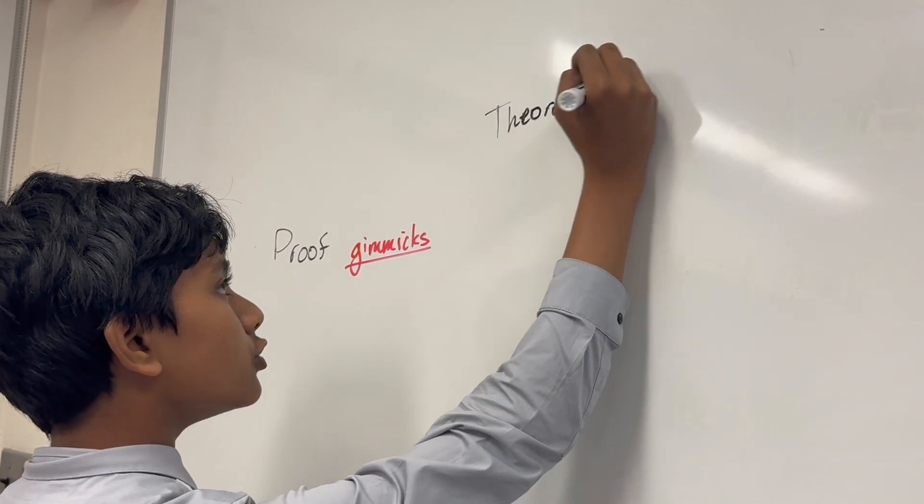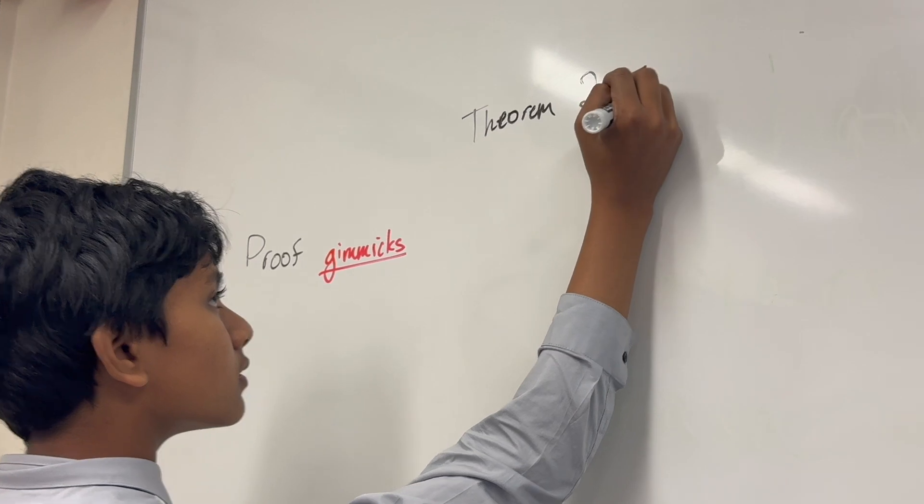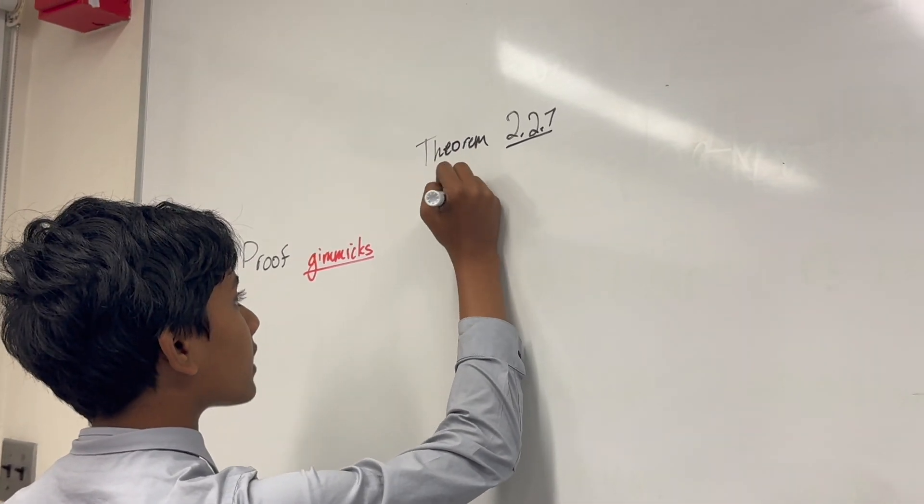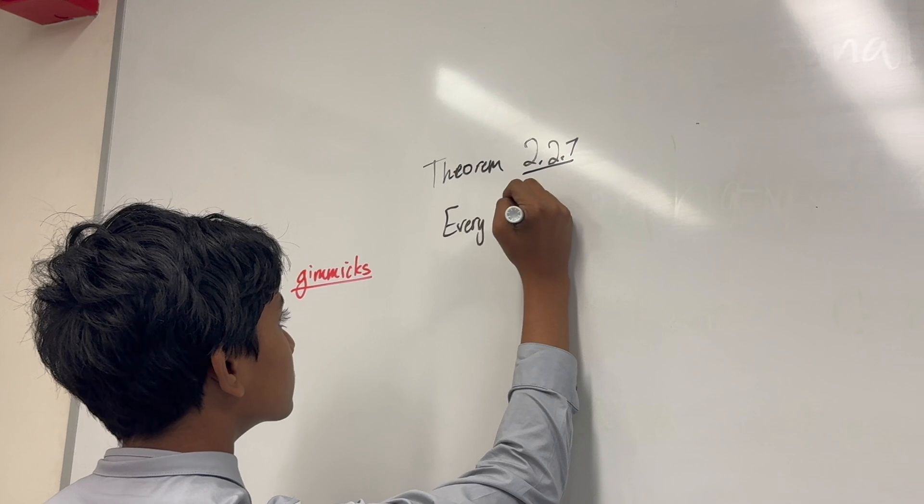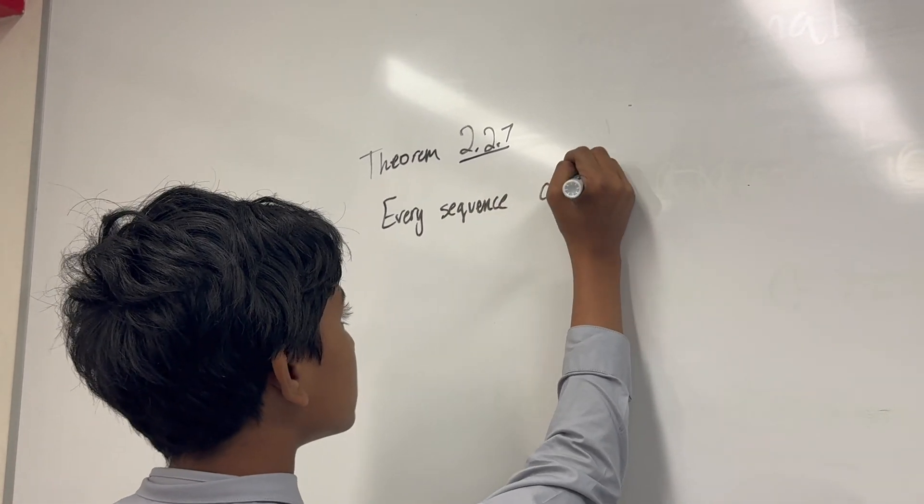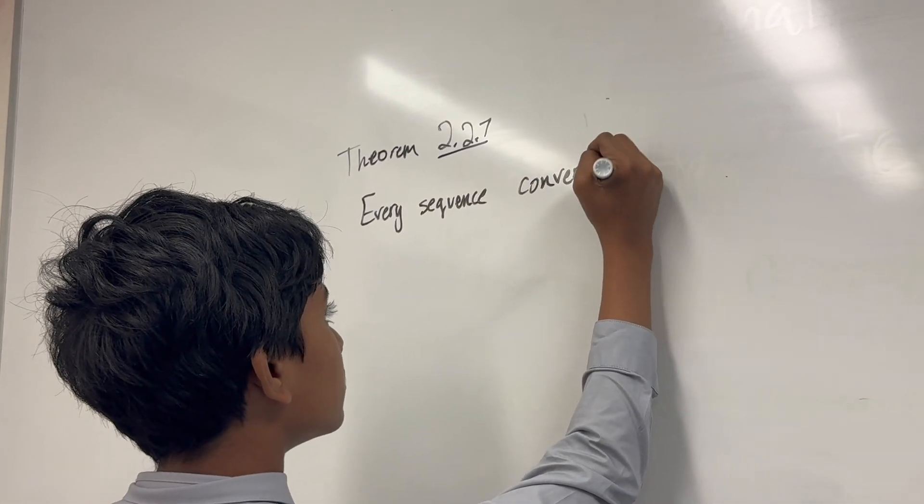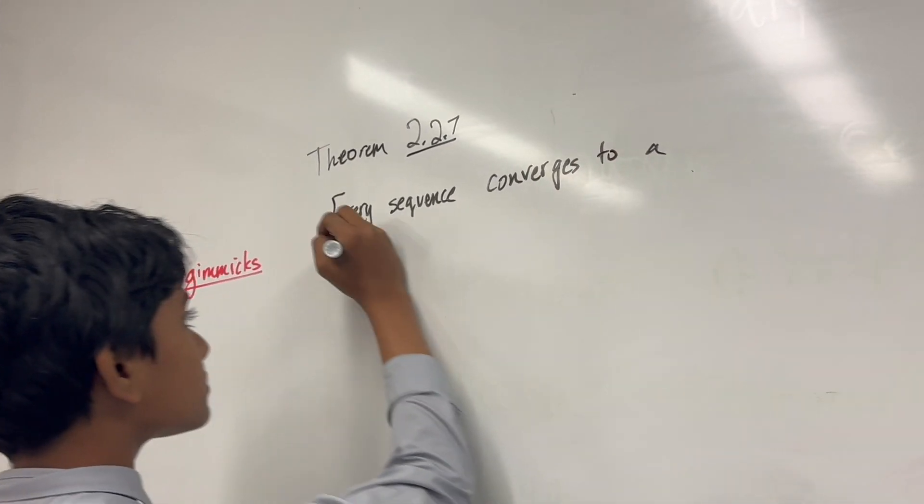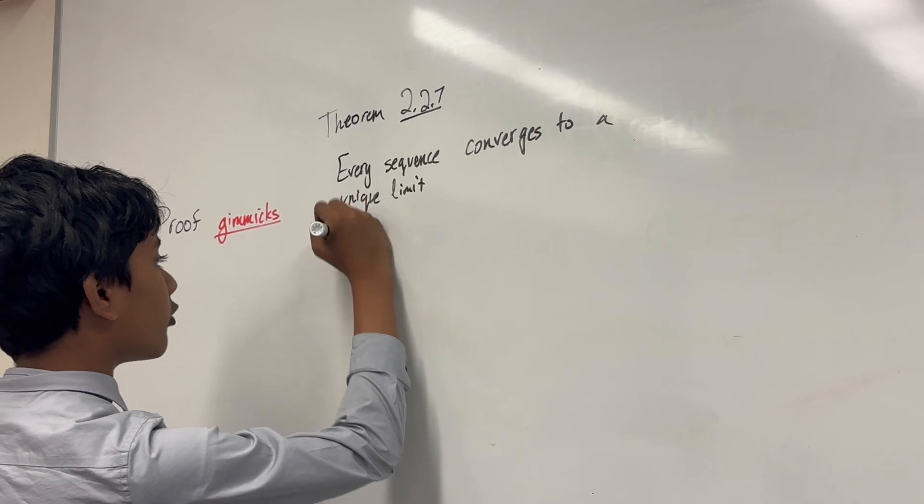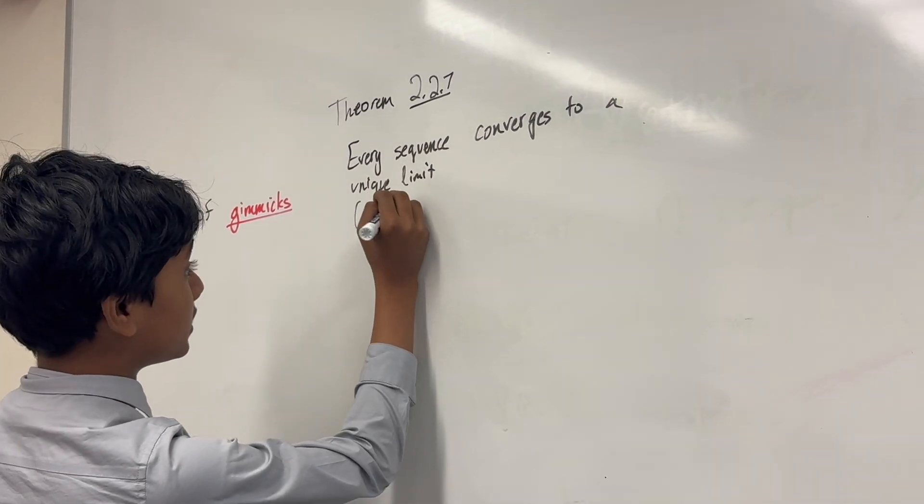Theorem 2.2.7. What is it? Every sequence converges to a unique limit, provided they have a limit in the first place.